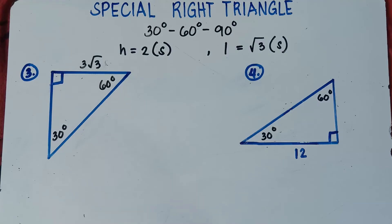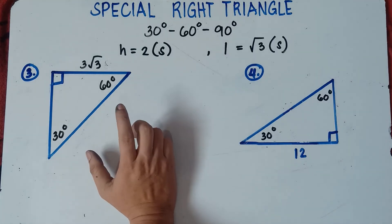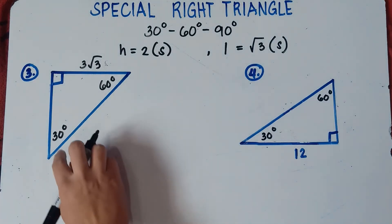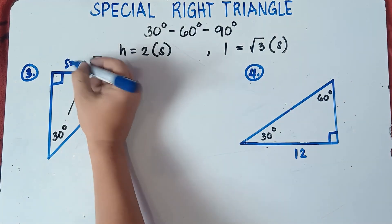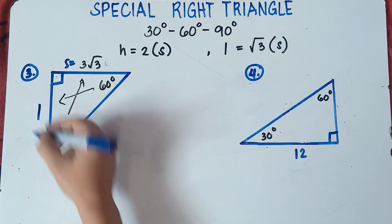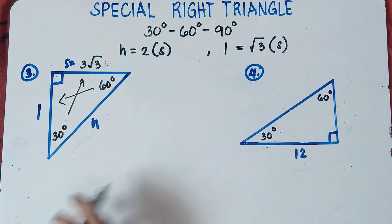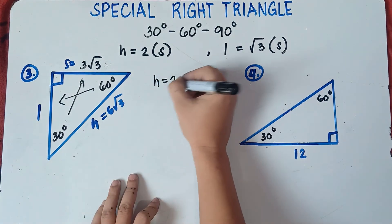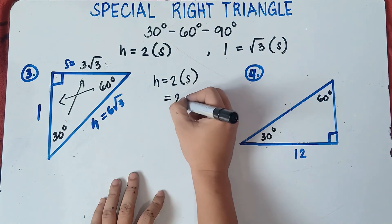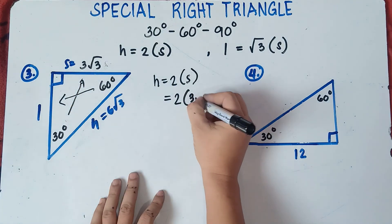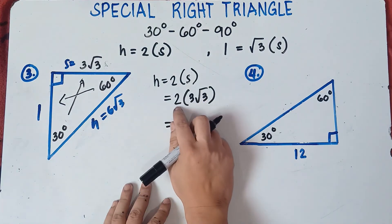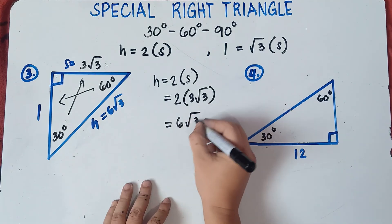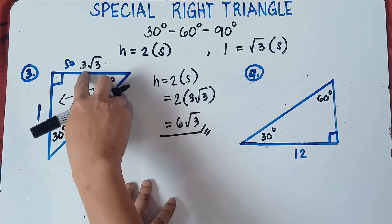Let's try more tricky examples. Example number three: we have given 3√3 as the shorter leg — opposite the 30-degree angle. The longer leg is opposite the 60-degree angle, and the longest side is the hypotenuse. You can find the hypotenuse directly: 2 × 3√3 = 6√3, because 2 times 3 is 6, and we copy √3.